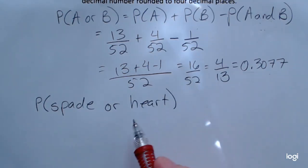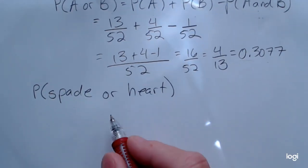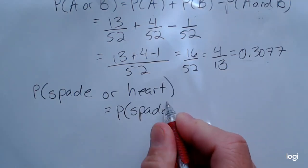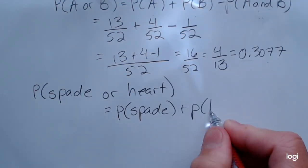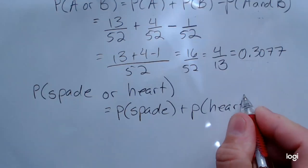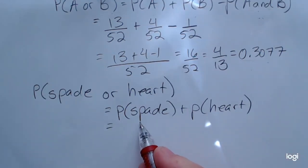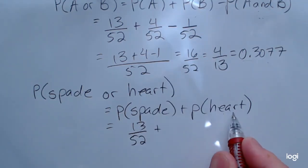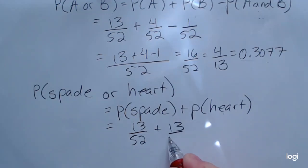In this situation, I don't need to subtract out the probability of them occurring together. It's just going to be the probability of getting a spade plus the probability of getting a heart. That's going to be 13 out of 52 because there's 13 spades, and also the same number of hearts, 13 out of 52. This is pretty much half the deck.